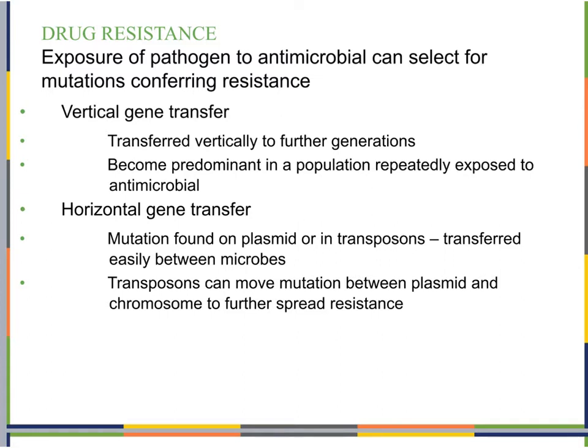When a pathogen is exposed to a particular antimicrobial, some will die right away — completely susceptible. Some may be a little resistant, perhaps due to a small mutation in the DNA during binary fission. And some may be a lot more resistant. So we have a soup of bacteria with varying levels of resistance or susceptibility to a particular antimicrobial.